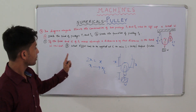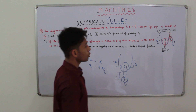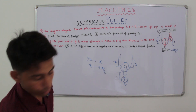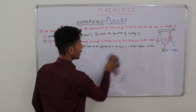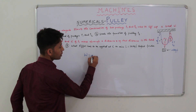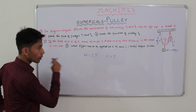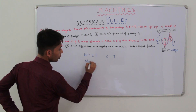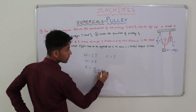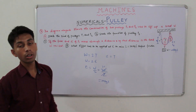Moving on to part D: what effort has to be applied at C to raise a load of 20 kgf, neglecting friction? From the figure we can see that W equals 2T, meaning weight equals 2T, and effort equals T. By putting T equal to effort, W equals 2E, or E equals W divided by 2. Since W is 20 kgf, effort equals 10 kgf to raise the 20 kgf load.